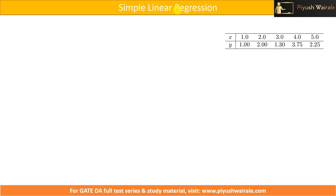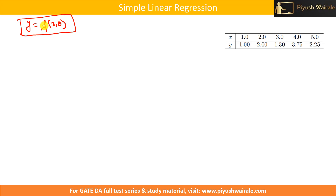What is regression in general? We have discussed this: y is equals to f of x comma theta, where x is the independent variable, y is the dependent variable, and theta is basically the coefficient of this particular variable. This is the general expression for regression.